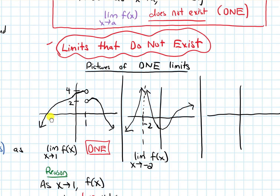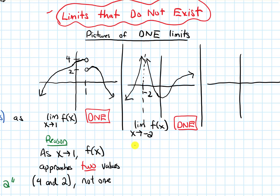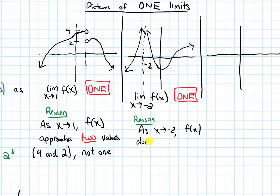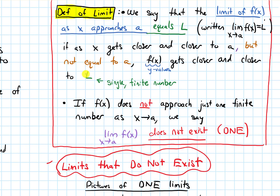Here as well, this limit is going to be DNE. The reason is that as x approaches negative 2, f of x — our outputs or y values — does not approach a finite number. It needs to be approaching a single finite number for the limit to exist, and that's not happening here.